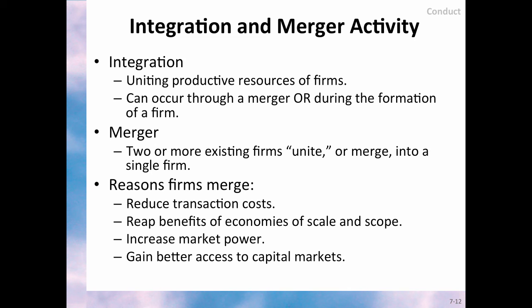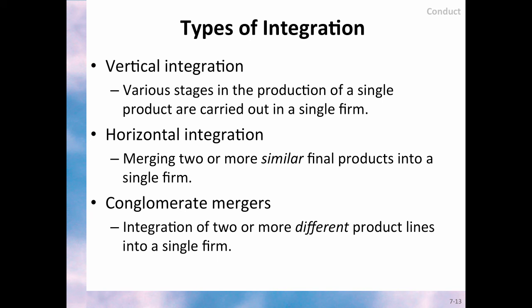Industry activity also involves companies' integration through mergers — for example, when two or more companies unite or merge into a single firm. Integration is an important factor determining market structure since mergers often take place to reduce production or transaction costs, to achieve economies of scale and increase efficiency, or to increase market power and gain some ability to control market prices. Integration can be vertical, when various stages of the production of a single good or service are carried out in a single company. Or integration can be horizontal, when merging two or more similar final products into a single firm. A more complex merger takes place through a conglomerate merger, which is the integration of two or more different product lines into a single firm.